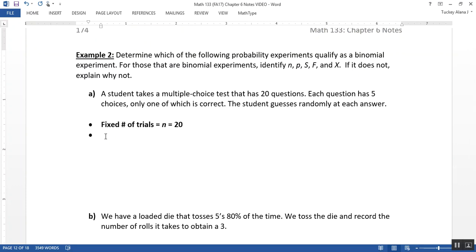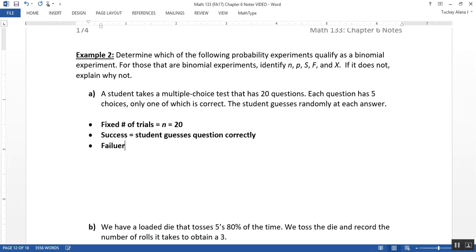Then we need to figure out the probability of success, or excuse me, we have to figure out what success is to find it. So success is equal to, so in a question like this, it doesn't really state it, but it's kind of obvious. It would be that for any one question that the student guesses correctly. So student guesses question correctly. Then failure, which would be equal to F, by the way. So we're figuring out S and F right here. So S is what success is, and success and failure are not numbers, they're actually going to be defined. So you're going to define them with words. So this would be the student guesses the question, or guesses incorrectly.